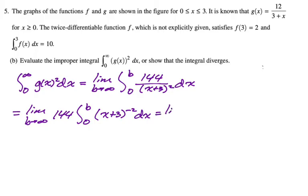the quantity x plus 3 to the negative second dx. Then it's going to be plus 1 times the reciprocal. So we'll get the limit as b approaches infinity of negative 144, because the reciprocal of negative 1 is negative 1. And then we have x plus 3 to the negative first, and I rewrote it as 1 over x plus 3. We're still going from 0 to b.